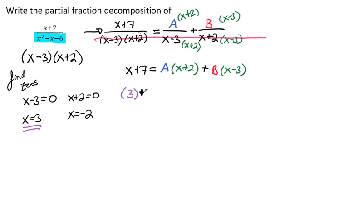So I have 3 plus 7 equals a times our 3 plus 2 plus our b times our 3 minus 3.